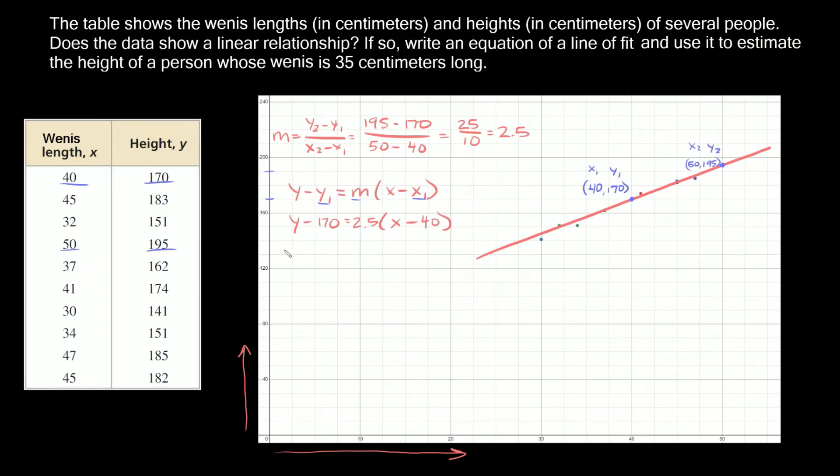Now we're just going to simplify this. y minus 170 equals—distributing this 2.5 into the parentheses—2.5x minus 100. Now we want to get this y by itself, so add 170 to both sides. Those cancel out, so we're just left with y equals 2.5x plus 70. Here is the equation of this line: y equals 2.5x plus 70.